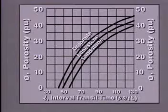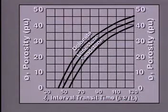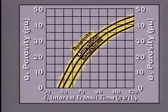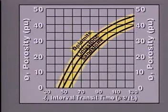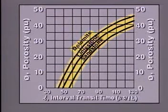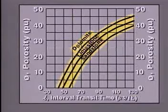Porosity from the acoustic log may be estimated from this chart based on empirical observations. The lines on the chart correspond to the matrix acoustic velocities of common reservoir rocks, and the chart is only valid for consolidated formations and when the fluid in the pore space is water or dead oil.